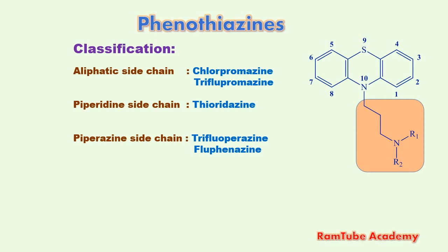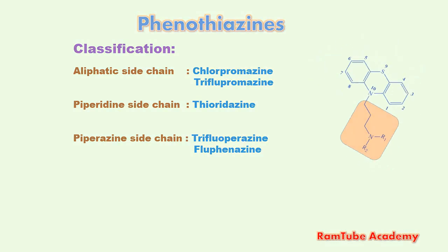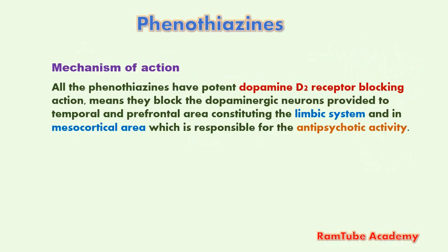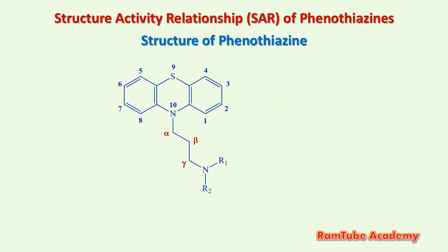The mechanism of action of phenothiazines: all phenothiazines have potent dopamine D2 blocking action — they block the dopaminergic neurons projecting to the temporal and prefrontal areas constituting the limbic system and the mesocortical area, which is responsible for the antipsychotic activity.